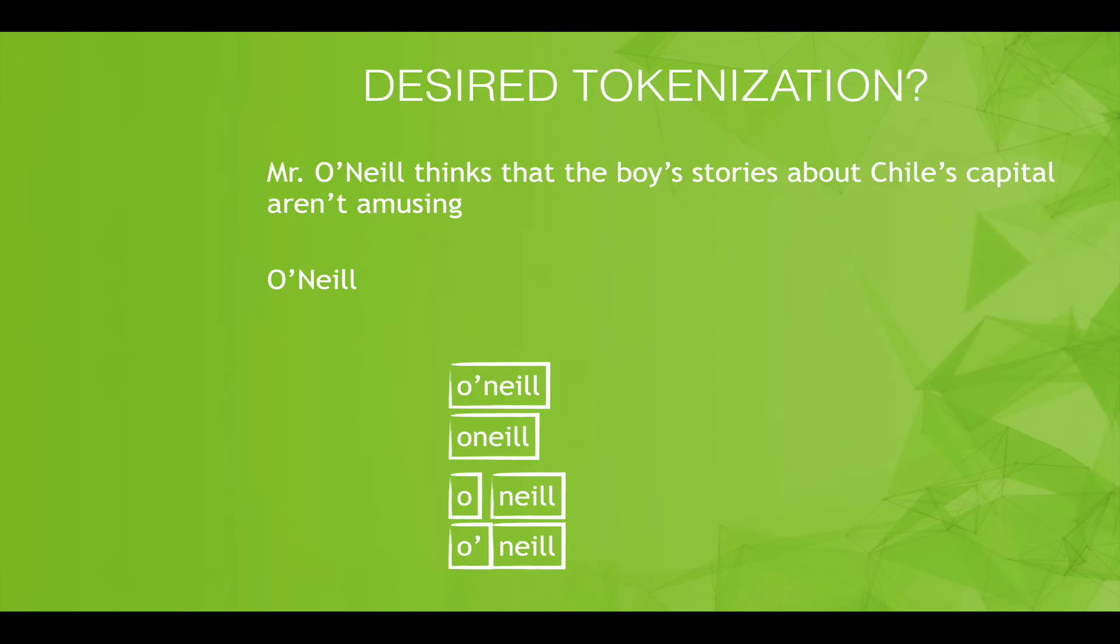But when we look at things like this: Mr. O'Neill thinks that the boys' stories about Chile's capital aren't amusing. How do we consider O'Neill? Do we use it as one word? Do we divide at the punctuation? Do we keep the punctuation and divide? There are various options. And should we treat O'Neill the same as we treat aren't? Is aren't one word or not one word? Should we somehow convert it into R and NT? There's questions of what would be the most preferable way.